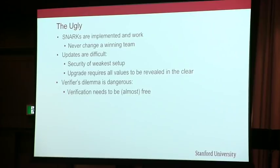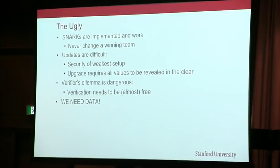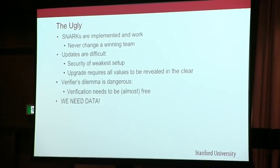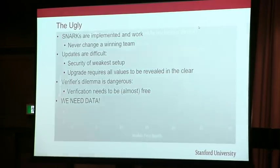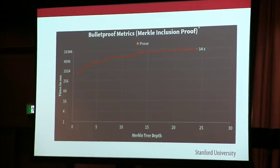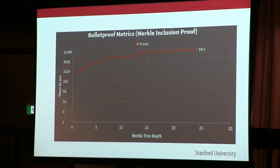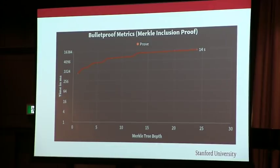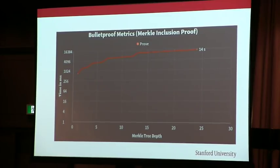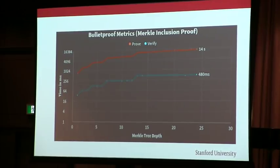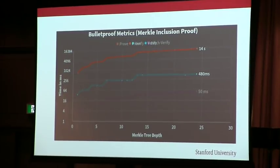To really judge this we need some data. The simple experiment we ran shows how much a Merkle inclusion proof costs — that's the majority of the circuit, so you multiply the numbers by roughly two to get the real estimate. The proving time is roughly 14 seconds. The verification time is half a second. But with batch verification, it's only 50 milliseconds.